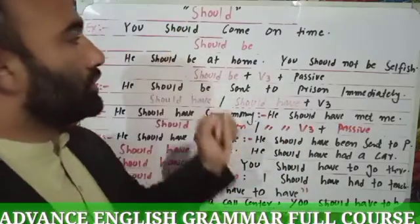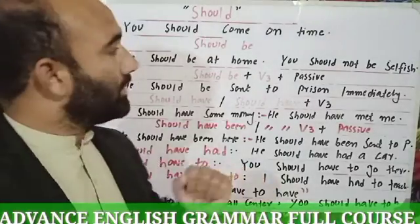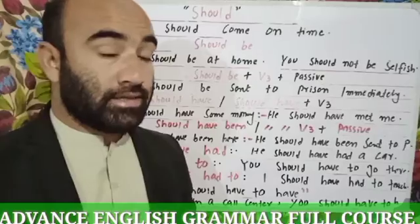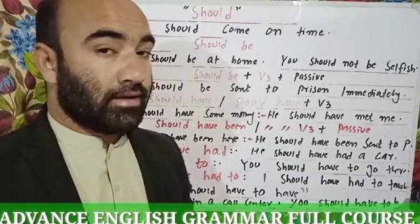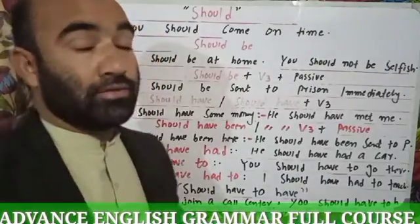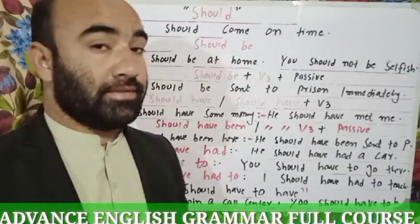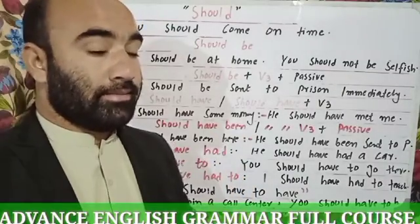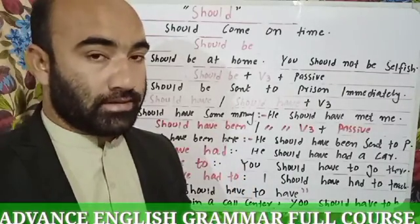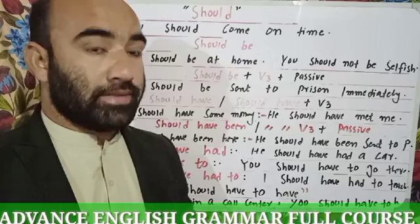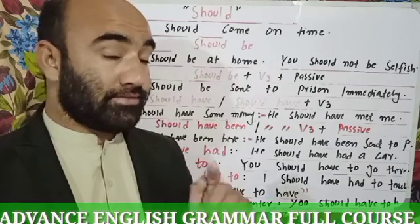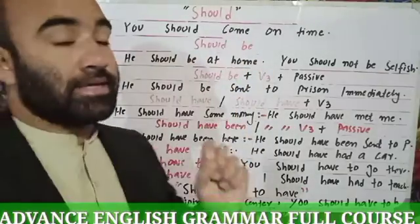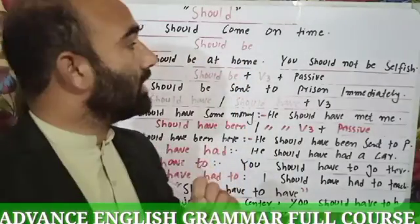Let's talk about the example: 'You should come on time.' Let me tell you one thing here. Whenever we are using the word SHOULD in the present, we use the base form, the root form, the first form of the word with SHOULD, because SHOULD is a modal verb. And with the modal verb, in the present, we use the base form of the word. 'You should come.' — 'come' is here the base form of the word.